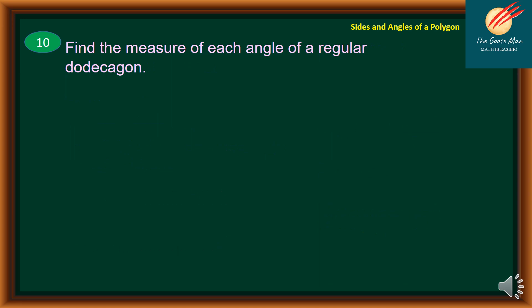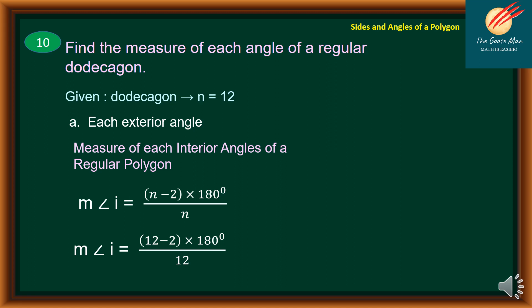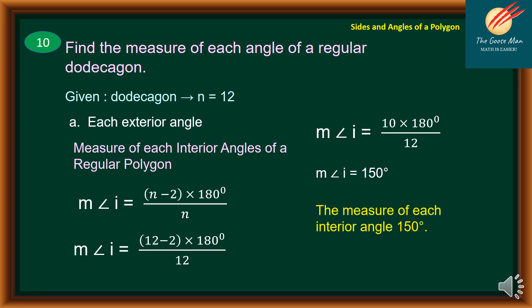Problem 10: find the measure of each angle of a regular dodecagon. A dodecagon has 12 sides, so N equals 12. Using the formula (N − 2) × 180 divided by N, we substitute to get (12 − 2) × 180 divided by 12, which is 10 × 180 divided by 12. Therefore, each interior angle equals 150 degrees.